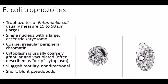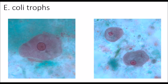The trophozoite of Entamoeba coli is very large, usually measuring about 15 to 50 microns. It has a single nucleus with a large eccentric karyosome and coarse, irregular peripheral chromatin. The cytoplasm is usually coarsely granular and vacuolated, often described as a dirty cytoplasm. Motility is different from E. histolytica — it is considered sluggish and non-directional, with short, blunt pseudopods.